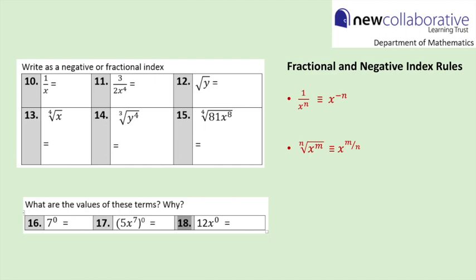Question 10: 1 over x is x to the power of negative 1. Question 11: the numerical part is 3 over 2, and the power of x part is x to the power of negative 4, giving 3 over 2 x to the power of negative 4. Question 12: the square root of y is y to the power of 1 half. Question 13: the fourth root of x is x to the power of a quarter. Question 14: the cube root of y to the power of 4 is y to the power of 4 over 3. Question 15: the fourth root of 81 is 3 and the fourth root of x to the power of 8 is x squared, so we have 3x squared.